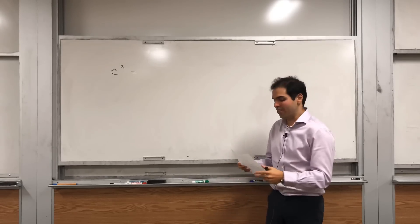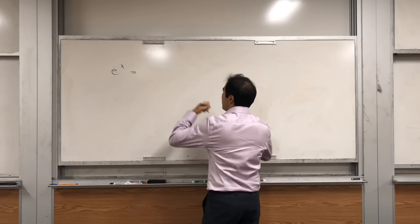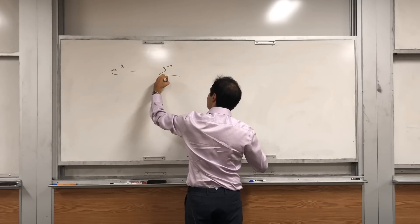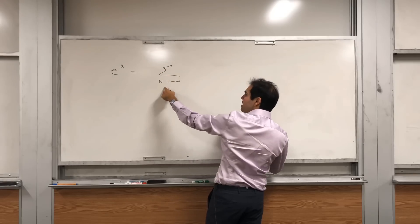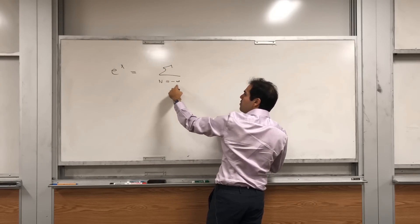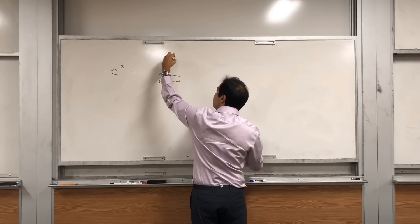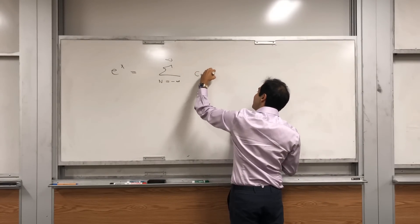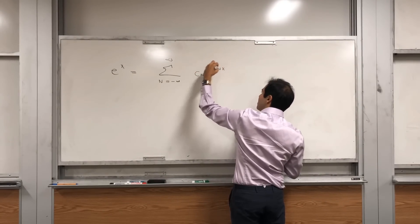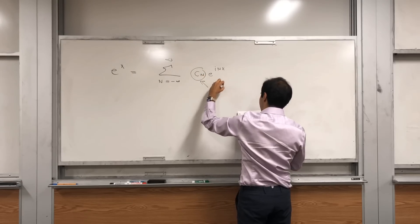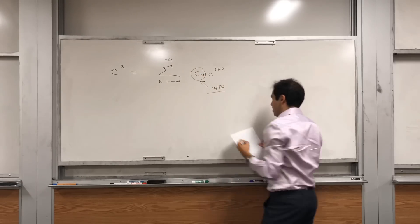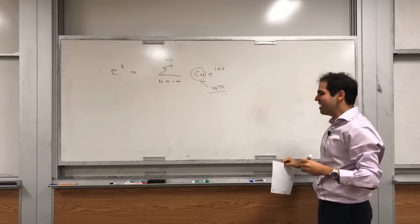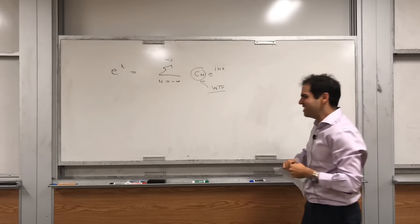So we're literally killing two birds with one stone. In this case for complex Fourier series, we get that e to the x is the sum from minus infinity to infinity — a two-sided sum — of Cn times e to the inx. And we want to find Cn. It turns out there's a very nice formula for Cn.